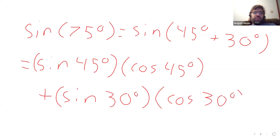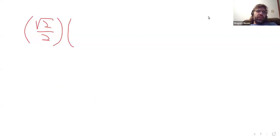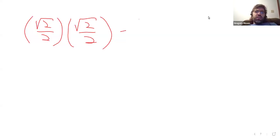And these sines and cosines are sines and cosines that we hopefully know. So the sine is the square root of 2 over 2. The cosine is also the square root of 2 over 2. The sine of 30 degrees is one half. The cosine of 30 degrees is the square root of 3 over 2.